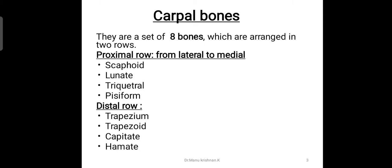There are a set of 8 bones arranged in 2 rows — a proximal row and a distal row — each constituting 4 bones. In the proximal row, considering lateral to medial, the first one is scaphoid, then we have lunate, triquetral, and pisiform. While in the distal row, we have the trapezium, trapezoid, capitate, and hamate.